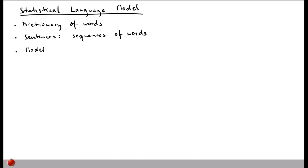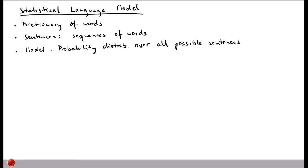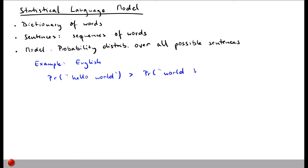For example, if our language is English and we ask the model about the probability of the sentence 'hello world' versus 'world hello', the first probably has a higher probability than the second because 'world hello' is an unusual ordering. By knowing how likely these two sentences are, you can tell which is probably the correct sentence.